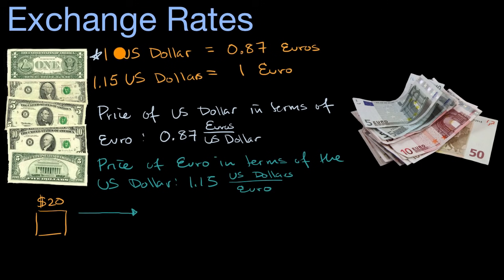If one US dollar is equal to 0.87 euros, then 20 US dollars is going to be 20 times as many euros. So we could say $20 times 0.87 euro per dollar, this symbol right over here is shorthand for euro. And so you are going to get approximately 17.40 euro.